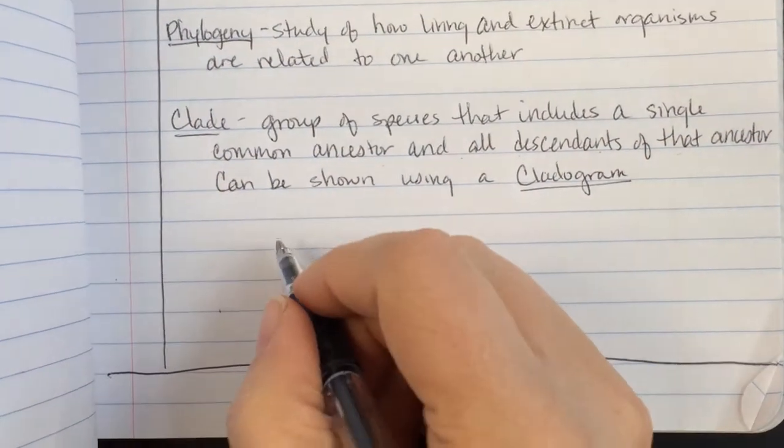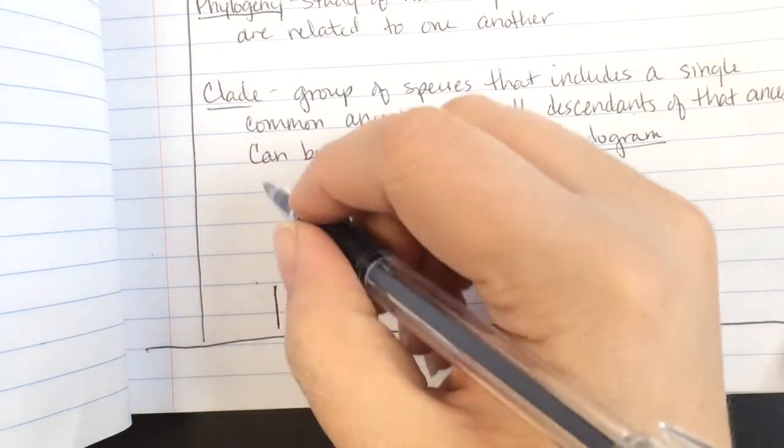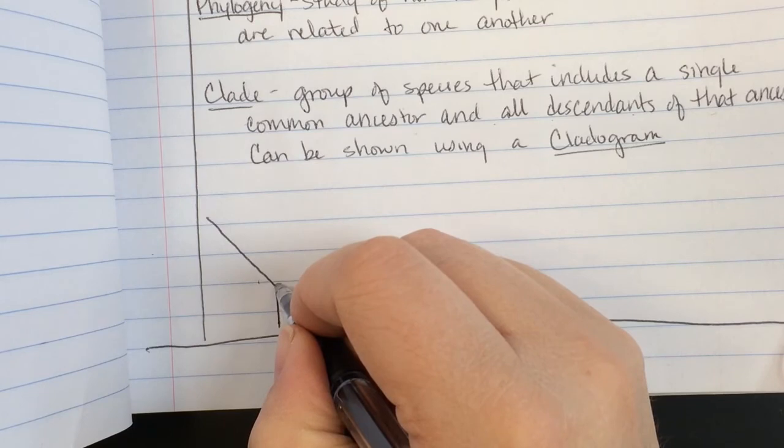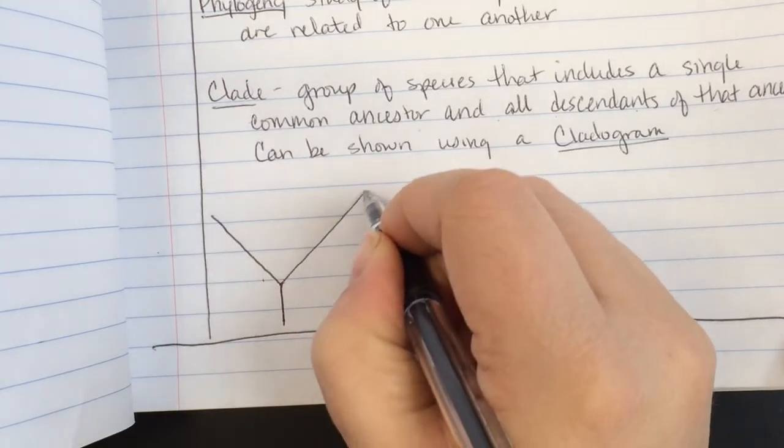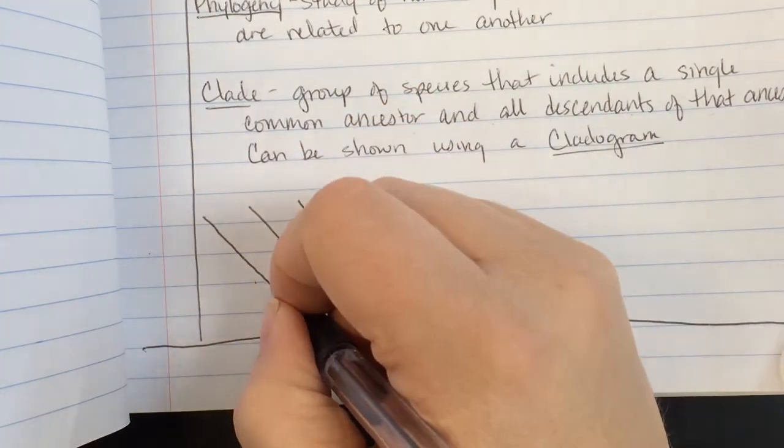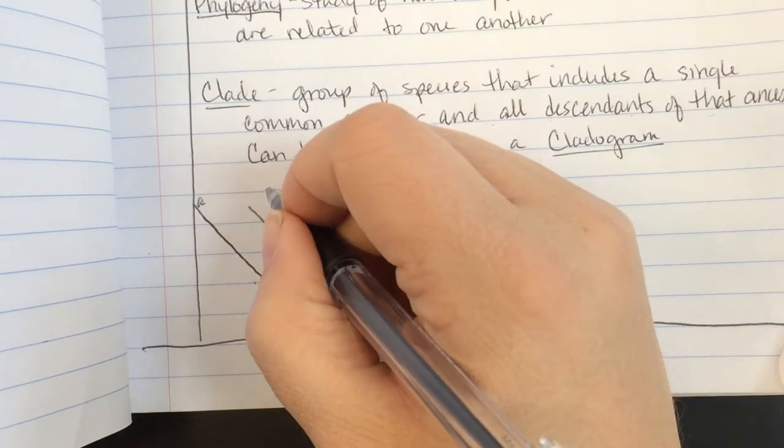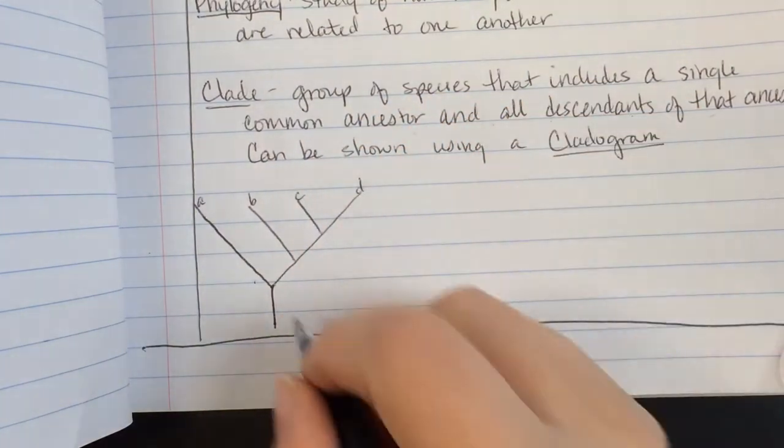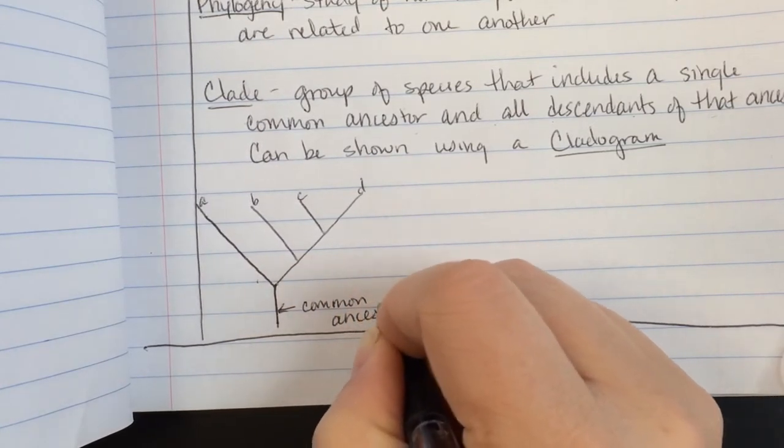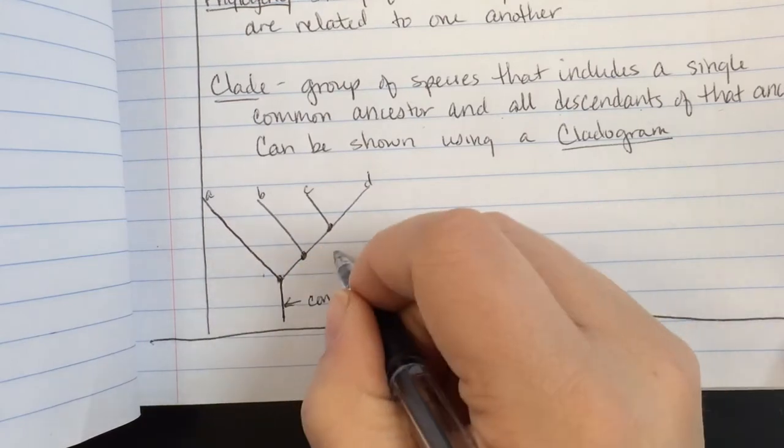And so a clade is a group of species that includes a single common ancestor and all descendants of that ancestor can be shown using a cladogram. And so, let's draw a little cladogram here. And so you might have, kind of, the original common ancestor. And then get a branching off of descendants. So you might have a line that goes up this way. And then they branched over here. But as they developed over time, there might have been some other branches going on, too. And some little changes and modifications that happened to those creatures over time. And so you could have species A, species B, C, and D. With right here being the common ancestor.